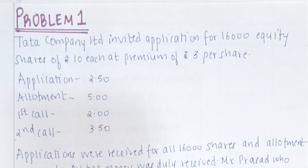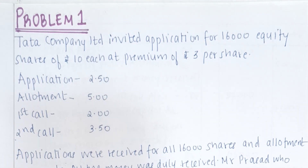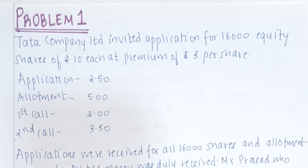Let's start with our first problem on calls in advance. The question says that Tata Company Limited invited applications for 16,000 equity shares of Rs 10 each at a premium of Rs 3 per share. In this problem we also have premium. Application is Rs 2.50, allotment is Rs 5, first call is Rs 2 and second call is Rs 3.50.